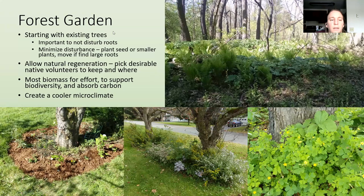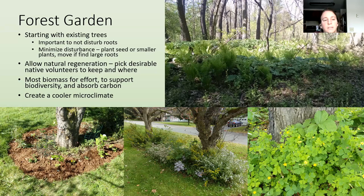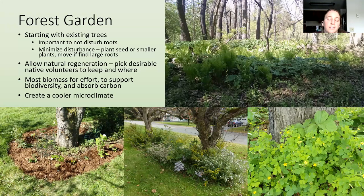If starting with existing trees, it's really important not to disturb the tree roots while planting. Minimize disturbance around the roots — you can plant seeds or smaller plugs to dig up less area. If you find a large root, cover it back up and move to the side. You can also allow natural regeneration — letting native volunteer trees or plants that are in good places and good species grow in. Make sure you're not letting invasives grow in. Local ecotype wild plants are always good to have, but you need to be close to a seed source for that to work.